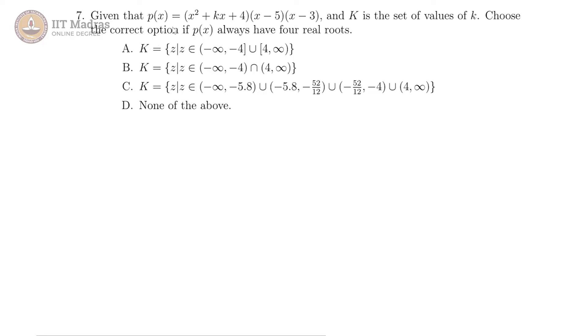In this question, we are given a polynomial p of x which is a product of a quadratic with a monomial and another monomial. And the quadratic has some variable k in it. Capital K is the set of values of this small k. Choose the correct option if p of x always has four real roots.